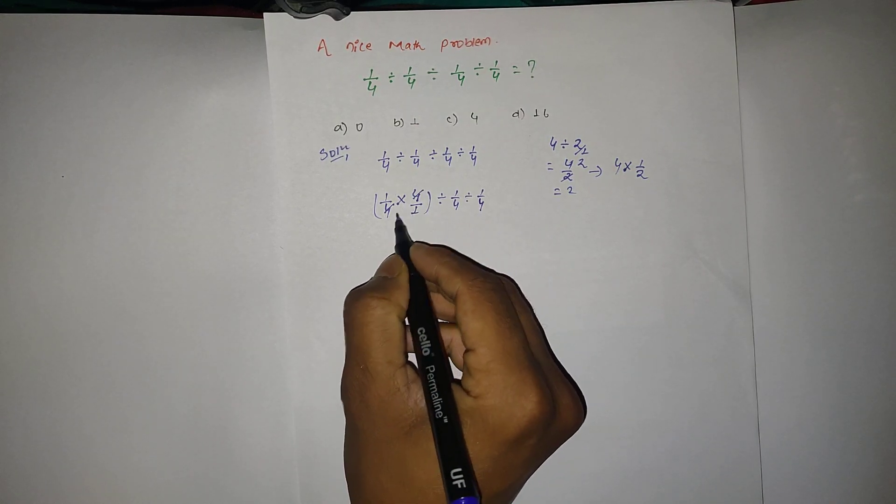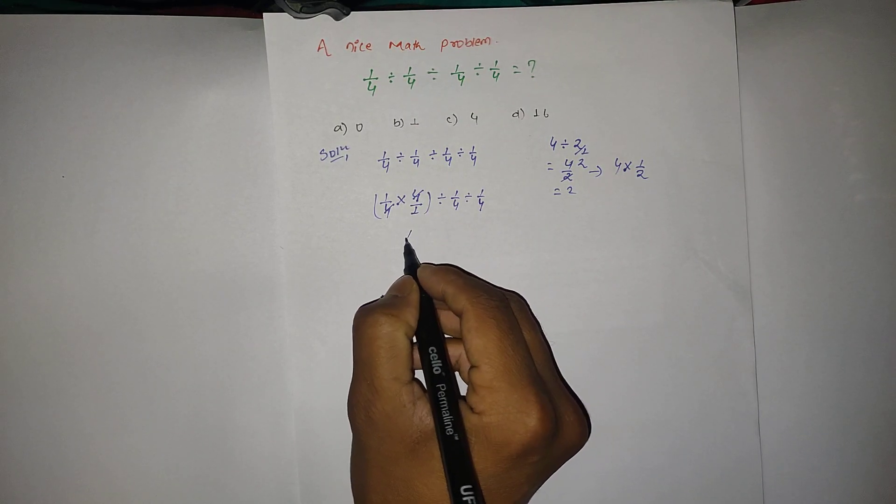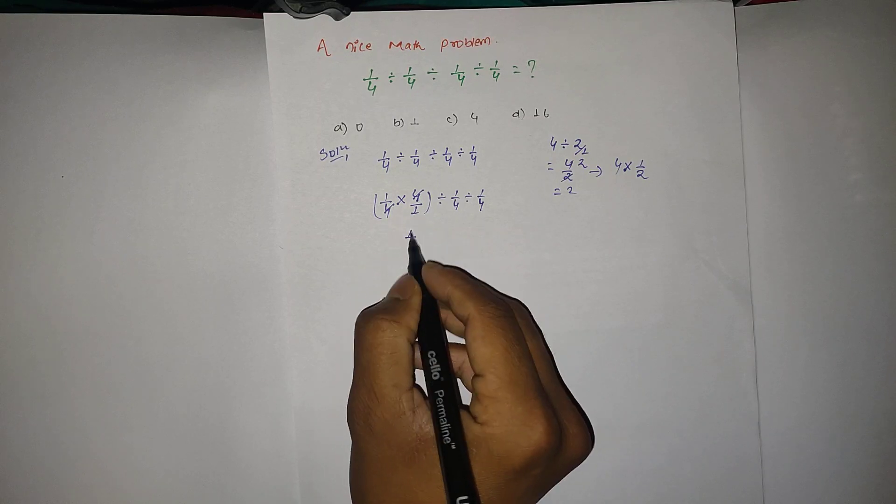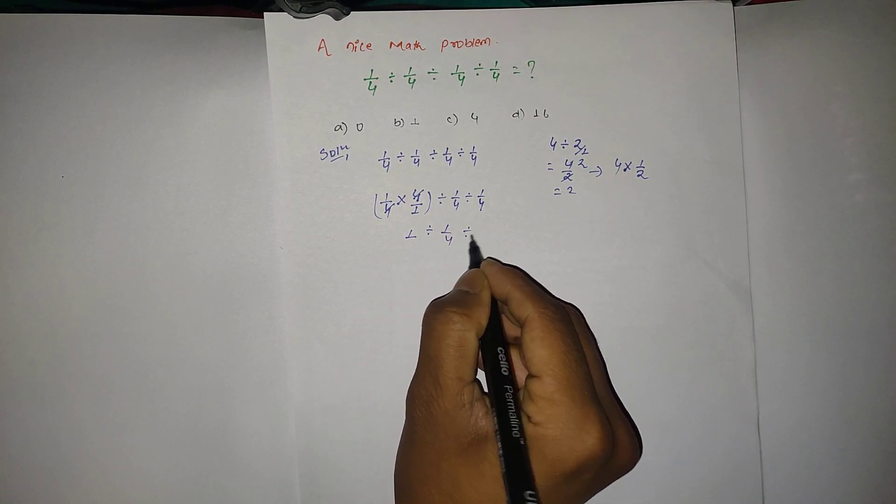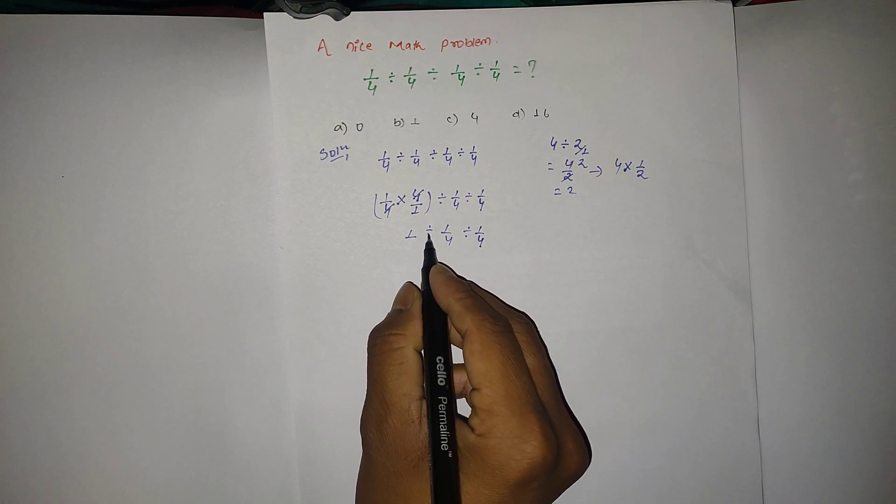1 × 1 is 1, divided by 1 is 1. 1 ÷ 1/4 then again divide by 1/4. So same again, we can change this divide into multiplication form.